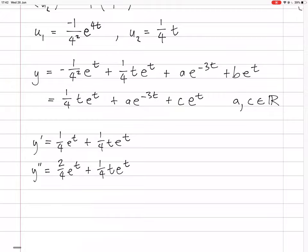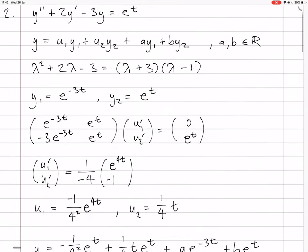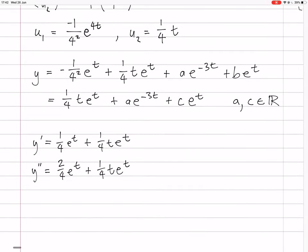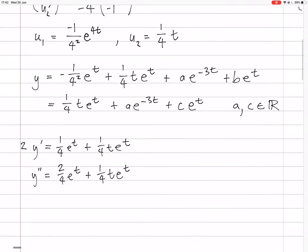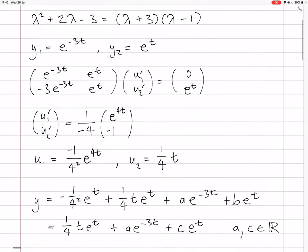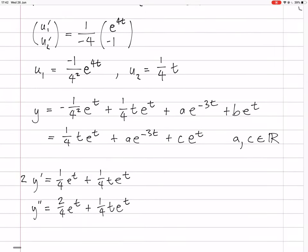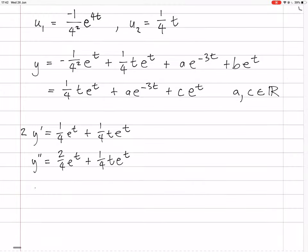Now the actual equation was y'' had a 1, y' had a 2, and y had a -3. So y was (1/4)t e^t, so that means this is actually going to be -3 times that. y'' is the same and this one needs to change to 2y'. So now if we look at the e^t terms, they do add up to 1.